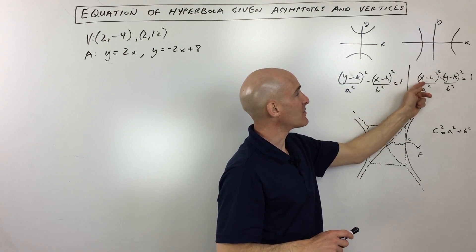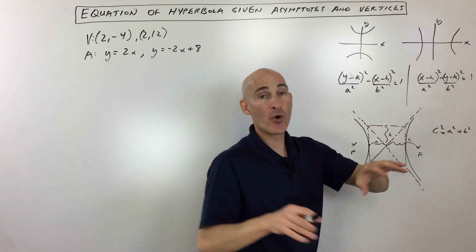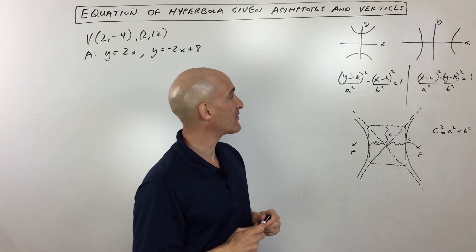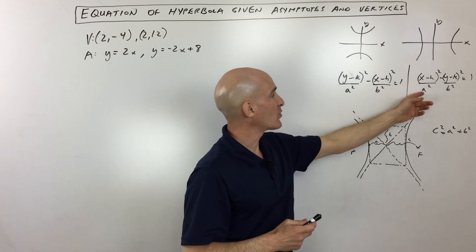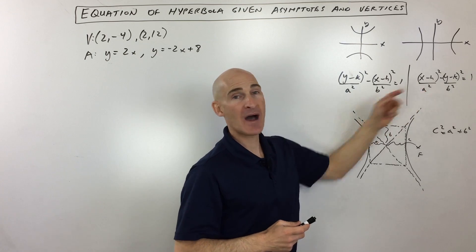And here you've got the x squared as the positive term when it's opening in the horizontal direction in the x direction left and right. And you notice that the a squared is with that first term or that positive term.